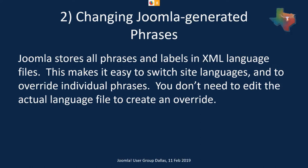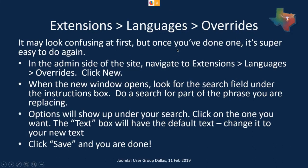The second way you can do overrides is language. This is one we don't think about very much because we're used to using the language that comes out of the box. But so much about Joomla is customizable, and if you can edit the language, maybe you should make it your own. We're here in Dallas — the Dallas Joomla user group, here in Texas — so maybe we can throw some Texas stuff up on our Joomla site. You can do that by using the language overrides under Extensions > Languages > Overrides. Once you've done it, it's super easy to do.